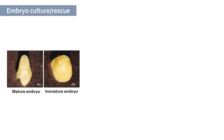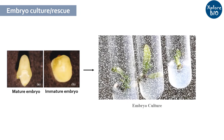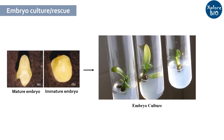For embryo culture and rescue, immature or mature embryos can be used. Mature embryos are essentially obtained from ripe seeds, while immature embryos are obtained from unripe or hybrid seeds that fail to germinate.